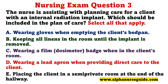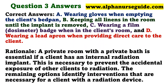The nurse is assisting with planning care for a client with an internal radiation implant. Which should be included in the plan of care? Select all that apply. A) Wearing gloves when emptying the client's bedpan. B) Keeping all linens in the room until the implant is removed. C) Wearing a film badge when in the client's room. D) Wearing a lead apron when providing direct care to the client. E) Placing the client in a private room. The correct answers are A, B, C, and D.